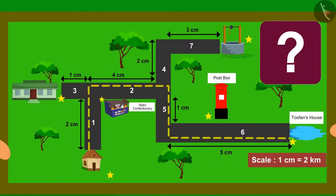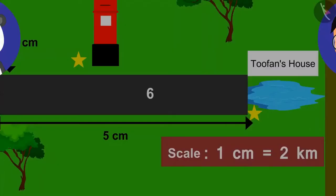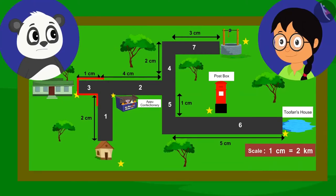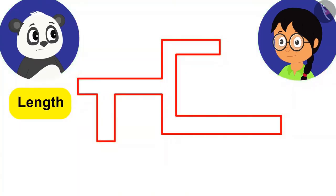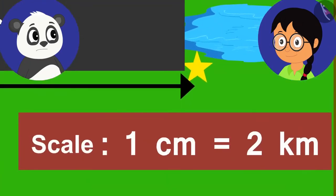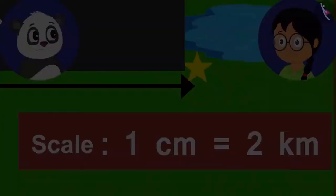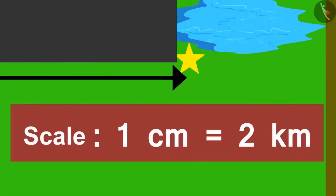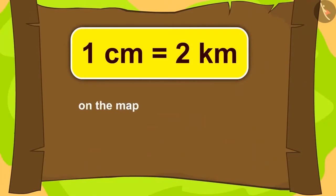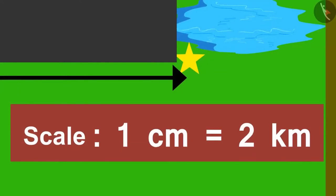What is a scale? Children, have you seen a map? Do you know about the scale on the map? Minu explains: because in reality paths are really long, we cannot show their full length on a small paper, therefore we use scale. As written on this map, 1 cm equals 2 km. This means that 1 cm on the map is equal to 2 km on the earth.